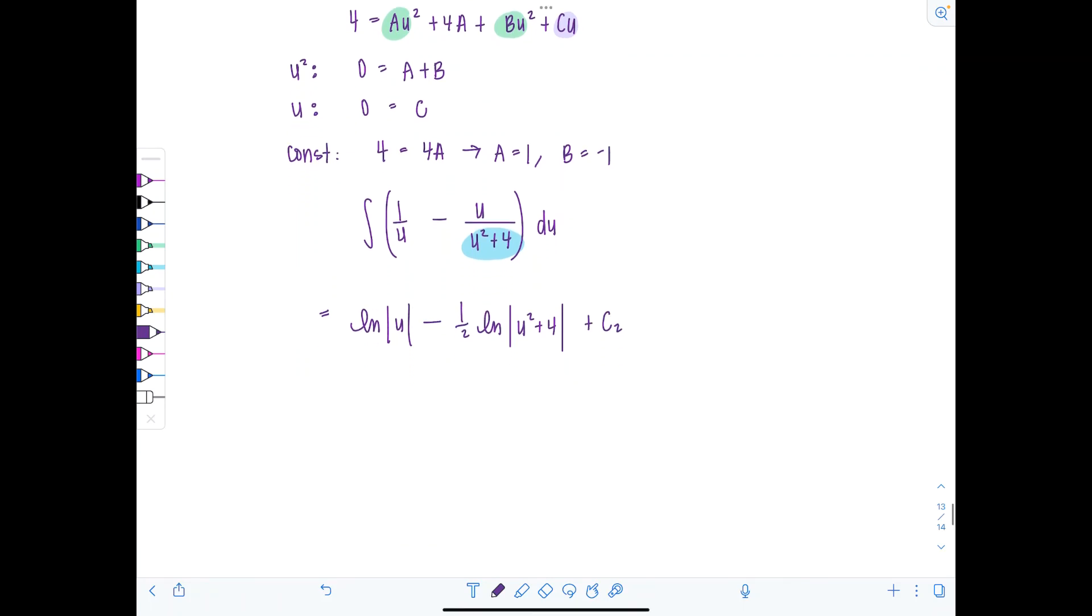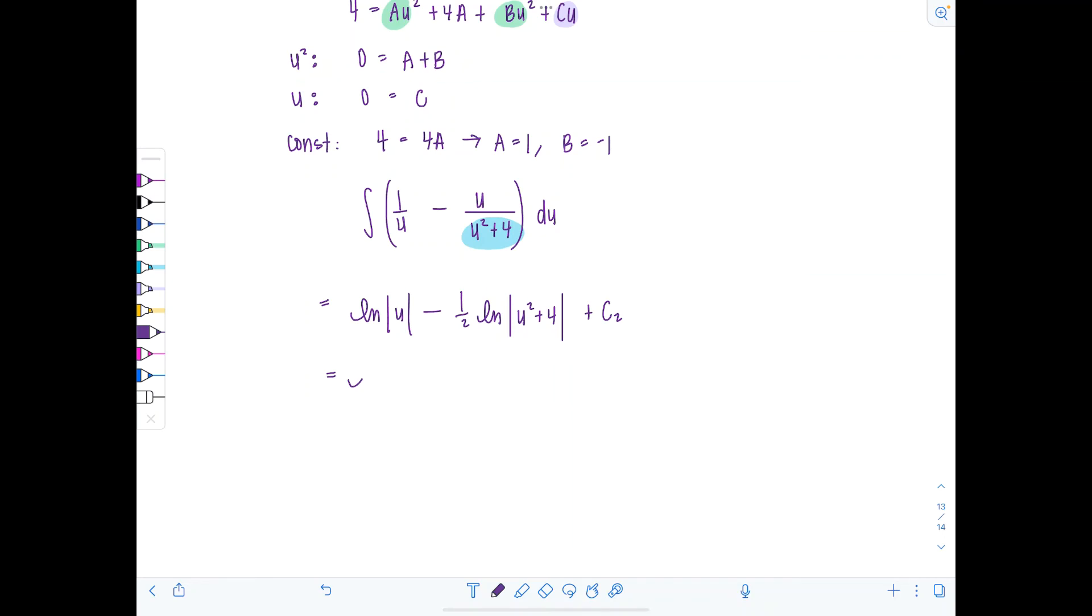And then we'll go back to our original variable. So this is going to be natural log absolute value e to the t minus one half natural log u squared plus 4. I don't need absolute value, e to the 2t plus 4. That's not going to be negative. Plus c2. And then ln of e to the t, I don't need the absolute value there. It's just e to the t. It's not going to be negative. And then this becomes t minus one half natural log of e to the 2t plus 4 plus c2.